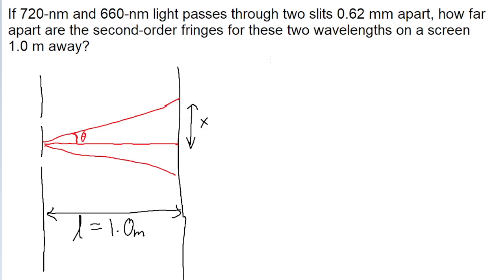This is a good opportunity to use our formula for constructive interference, which states that D, the distance between the slits multiplied by the sine of the angle theta, is equal to m, representing the order of the slits we're looking at, multiplied by the wavelength of the light itself.